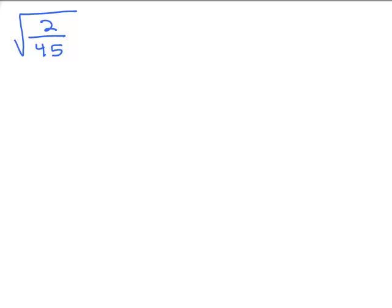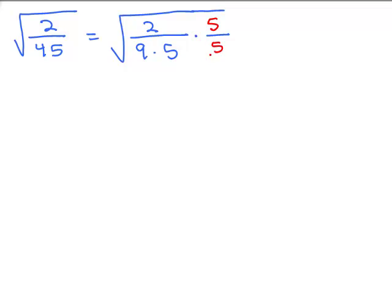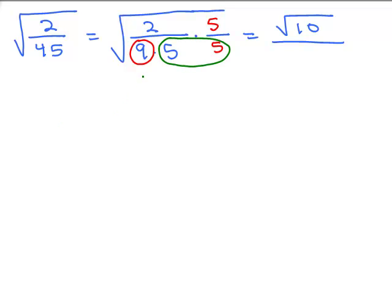Let's do another problem: square root of 2 over 45. You could take the square root of the numerator over the square root of the denominator. Writing the denominator in factored form might help you see what you really need. If I write the denominator as a perfect square times something, I have 9 times 5. I can see that 9 is a perfect square, but I also need a factor of 5 to take the 5 out. So in the numerator: square root of 2 times 5 is square root of 10. In the denominator, I've got the square root of 9, that's going to be 3, and from both those 5s I get a 5 out — so 3 times 5 is 15.